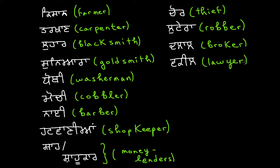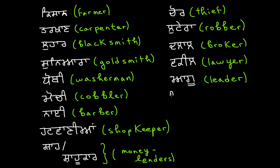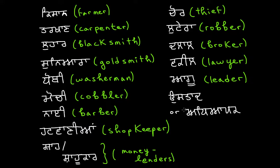After talking about a lawyer, let's talk about a leader. A leader is called an Agu. It's an Eda with a Kanna, we have a Gaga, we have a Dalankar — Agu. This would be a leader. Then, a teacher is either called an Ustad: a Ura with an Ankar, followed by a Sasa, Tata, a Kanna, and a Dada. Or the more common term for teacher would be Adya: an Eda, a Sari for the Tata, then an Eda with a Kanna, a Papa, and a Kakka. Both Ustad and Adya mean teacher.